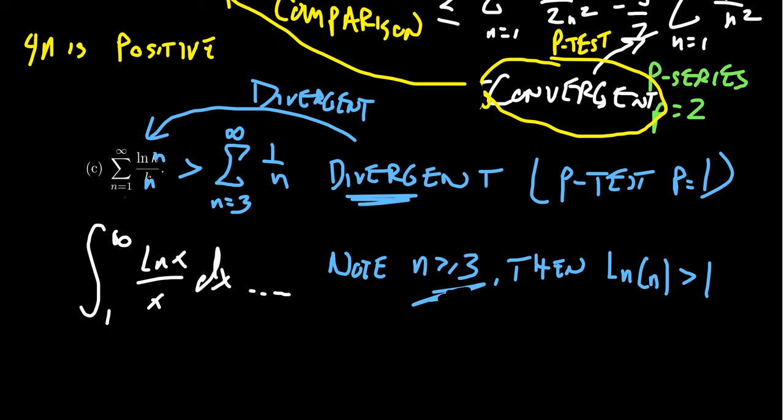The comparison test is most useful when you can easily compare to a p-series or geometric series, because those are often simplifications of the series in question and have simple convergence tests. If you're comparing to a series that itself has a difficult convergence test, you might as well apply that difficult test directly to the original series. Those are the key tips for using the comparison test.